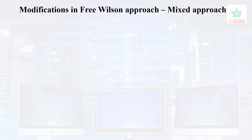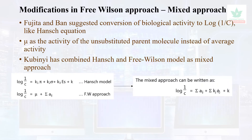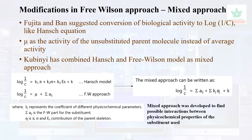The next topic is the modification of the Free-Wilson approach, which is a mixed approach. Fujita and Ban suggested conversion of biological activity to log 1/C as in the Hansch equation, using the activity of the unsubstituted parent molecule instead of the average activity. Fujita combined the Hansch and Free-Wilson models as a mixed approach, deriving a new equation. This mixed approach was developed to find possible interactions between the physicochemical parameters of the substituents used.